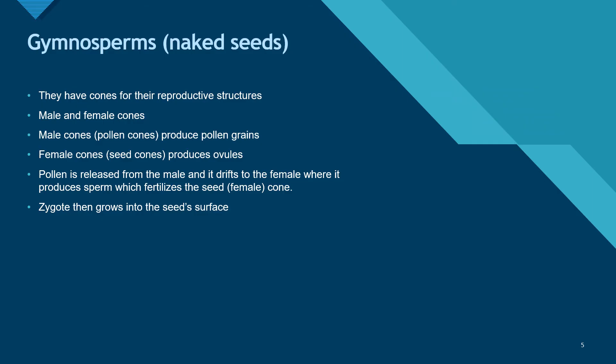Now we're going to talk about gymnosperms, or the naked seeds. For them, cones are their reproductive structures — they have male and female cones. Male cones, or pollen cones, only produce pollen grains. Female cones, or seed cones, produce the actual ovules. Pollen is released from the male and drifts to the female, where it produces sperm that fertilizes the female seed cones.